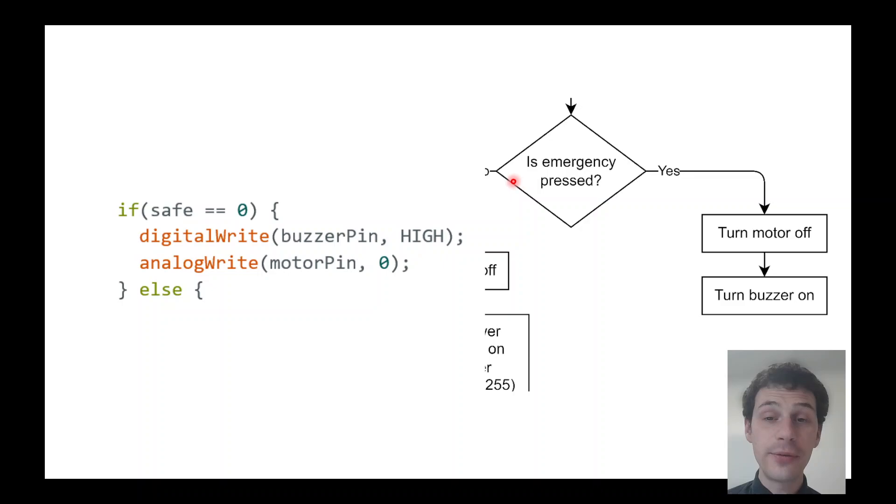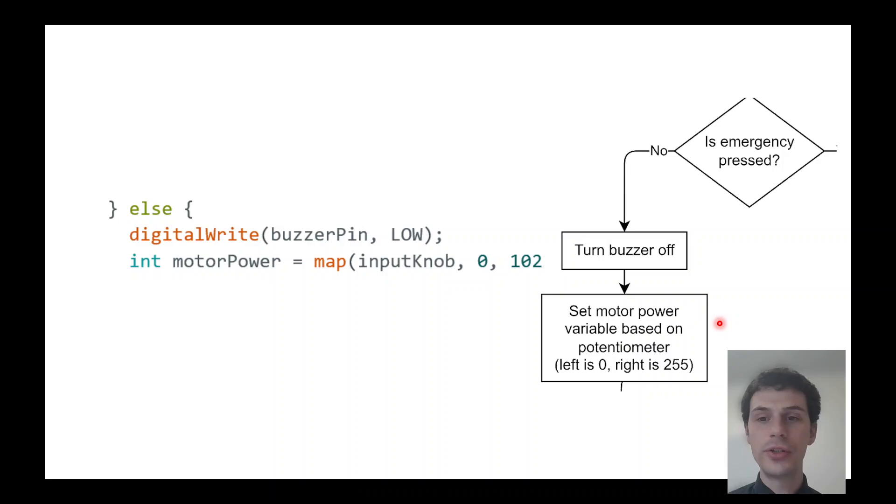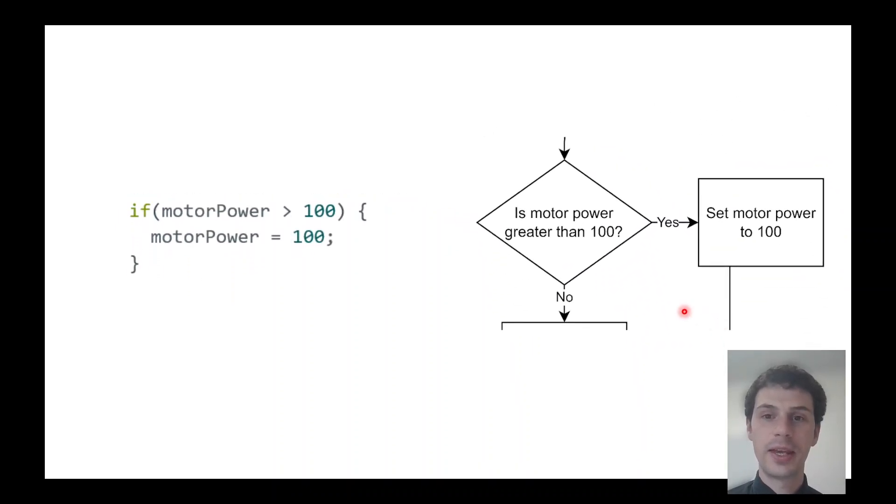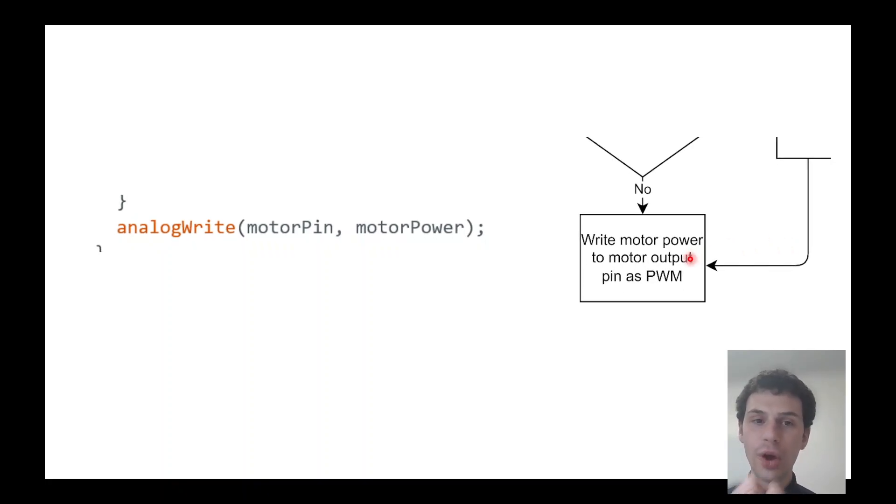I've got my if statement. Notice again, that if statement is a diamond and the branches out of it are labeled. I'm checking, is it safe? Is the emergency button pressed? If the emergency button is pressed, do these things. If not, do those things. Another if statement, checking if the motor power is too high. If so, changing it to be 100. Finally writing that motor power to the pin that controls the motor.